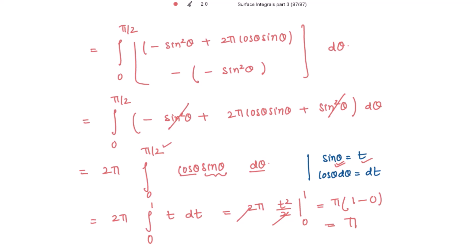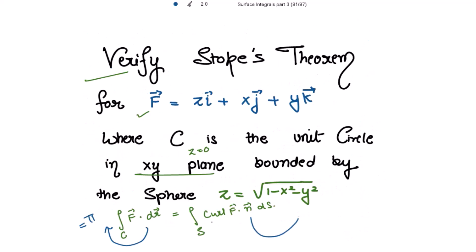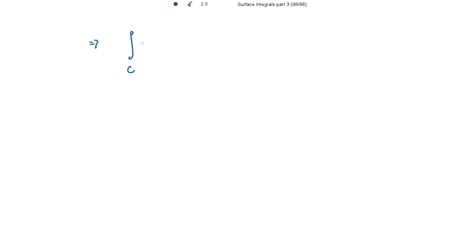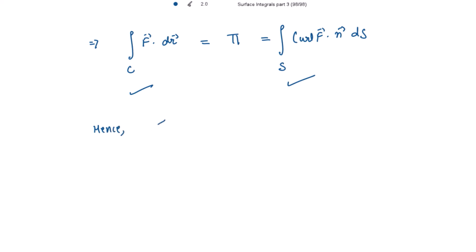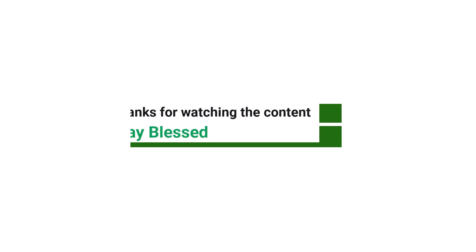So we are getting the value for the surface integral to be equal to π — the same value as the line integral. This means both the values of the surface integral and line integral are equal. Hence, the line integral of F vector dot dr vector equals π, and this equals the surface integral of curl F vector dot n vector ds. Hence, Stokes theorem is verified.